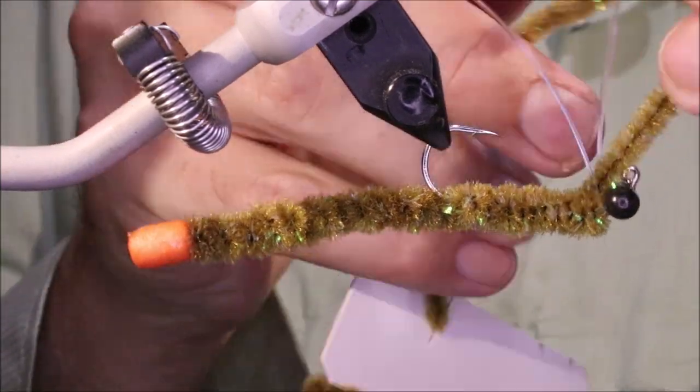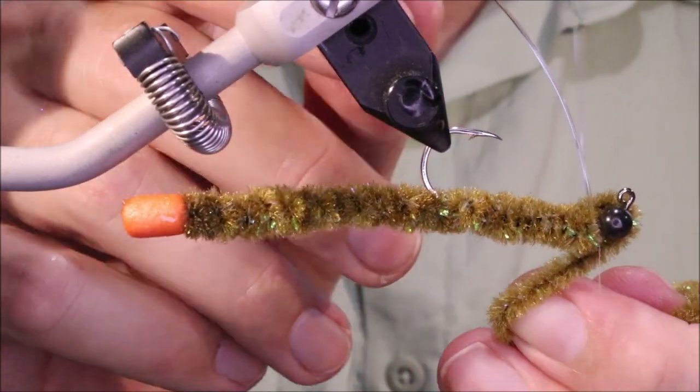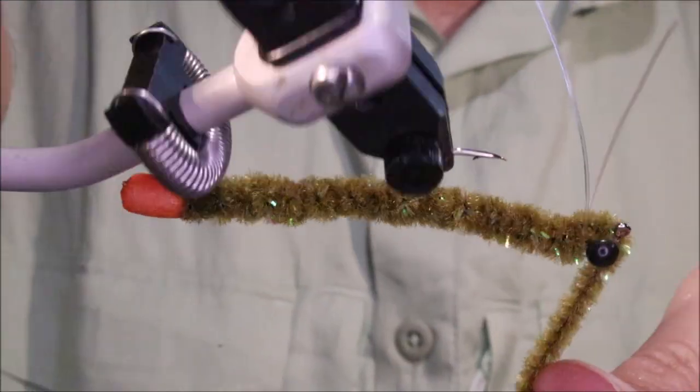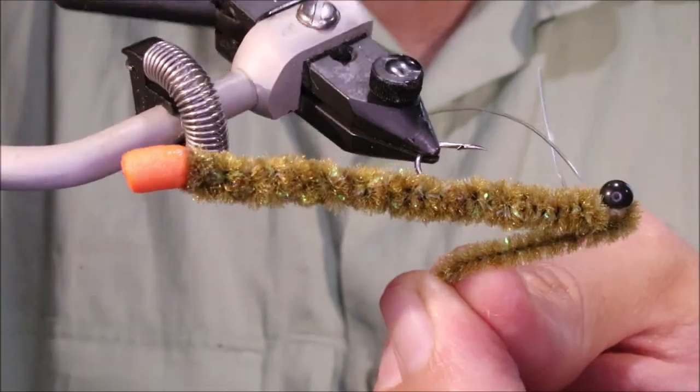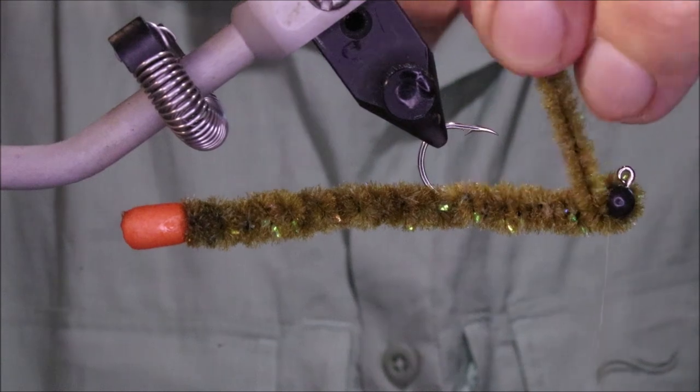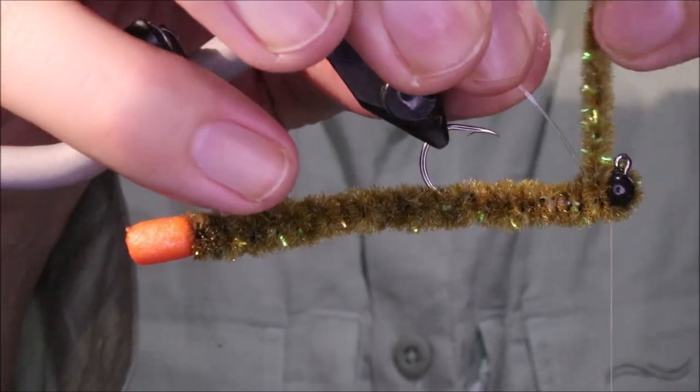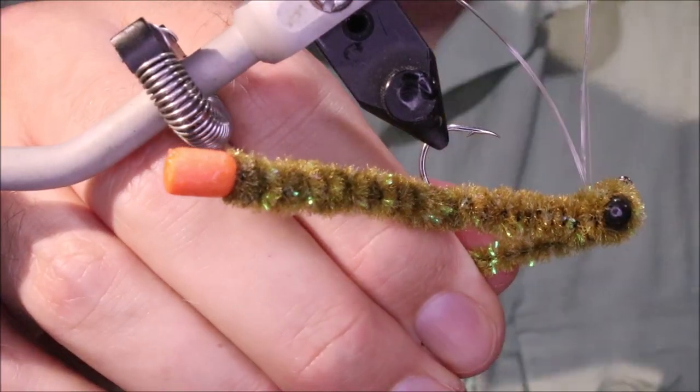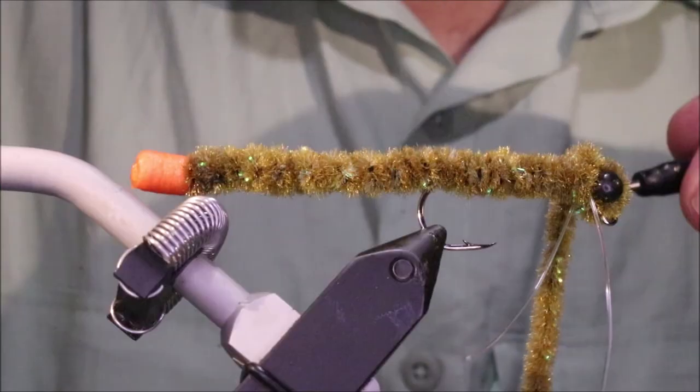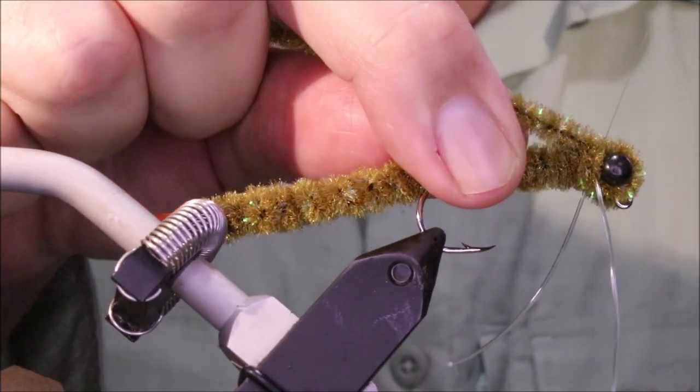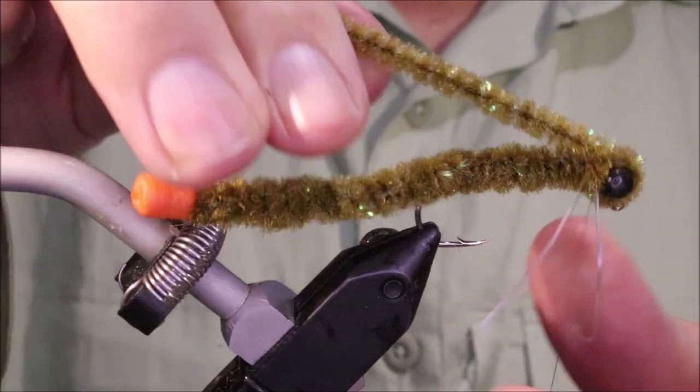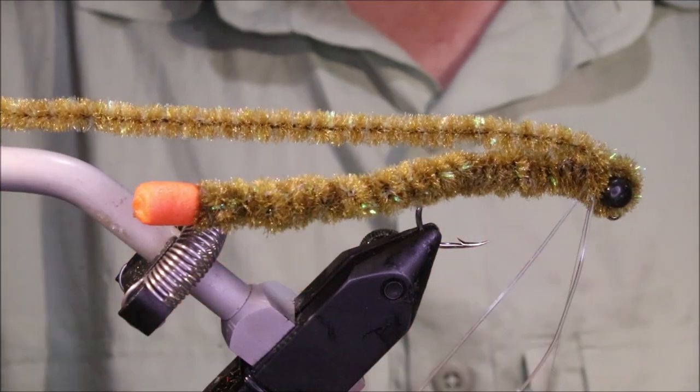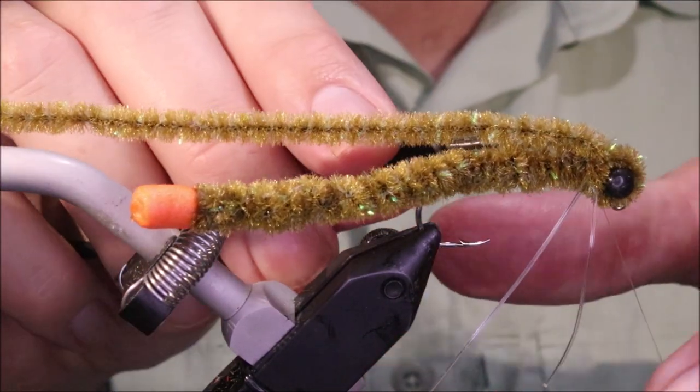So through the weed guard and over on my side of the hook eye. And I'll do the same on yours. I'll come over, I can tie it there. And this thread is fine enough that it'll just sort of sink in to the worm body.